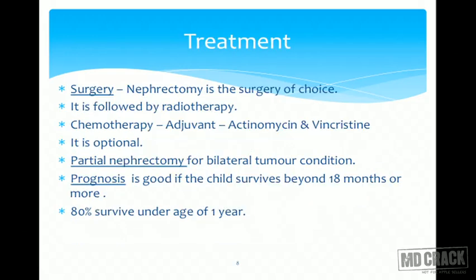For treatment, nephrectomy is the treatment of choice. In nephrectomy, we remove the ipsilateral affected kidney along with the fibro-fatty tissue in the Gerota's fascia, the Gerota's fascia itself, the ipsilateral vascular pedicle, the pelvis, and a portion of the ureter. This surgery is followed by radiotherapy. Adjuvant chemotherapy — consisting of actinomycin and vincristine — is also advocated in patients with significant lymph node involvement, but it is optional.